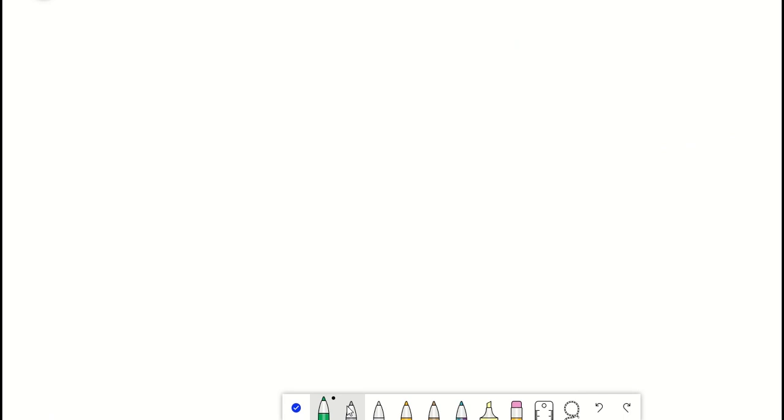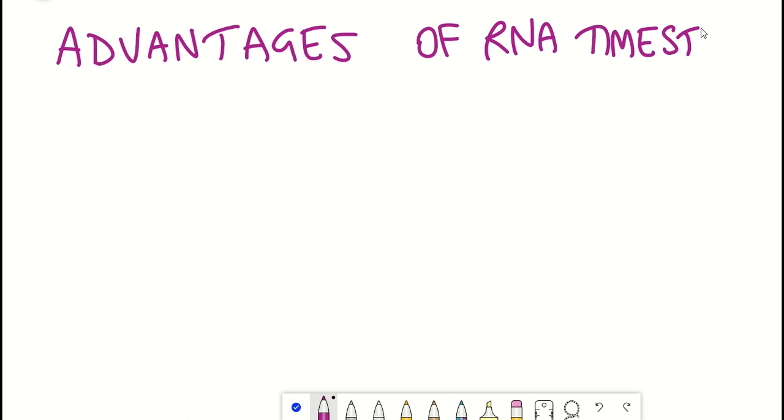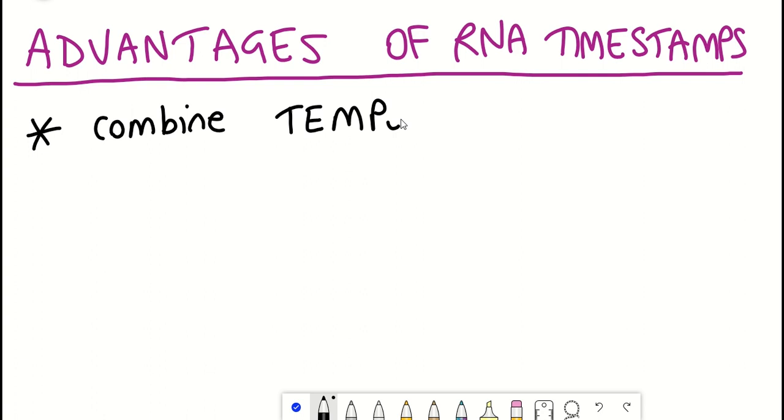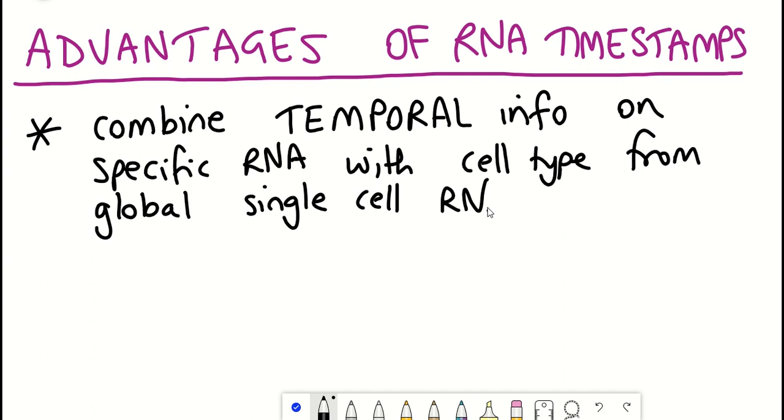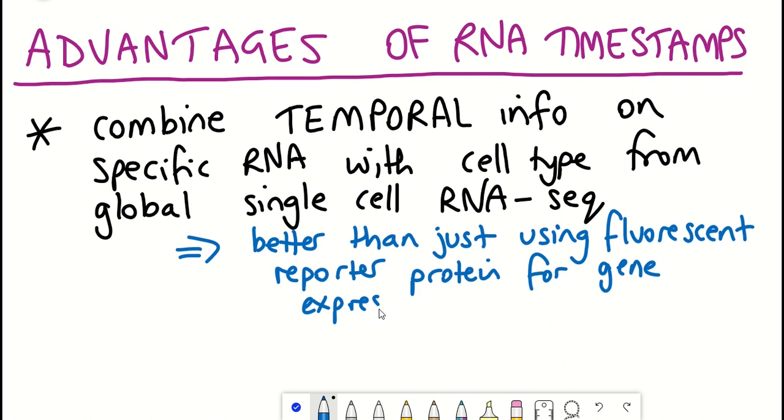Now, this new technique has some advantages over previous methods that also try to infer temporal information about RNA expression. Firstly, it's the fact that they can combine this temporal information from the RNA timestamp with information about the cell type by also having the RNA sequencing data. This has the advantage over fluorescent reporter proteins that just provide a readout of that specific gene and instead loses the information about other genes within that cell and also requires observation of the cells in situ as opposed to the destructive method of RNA sequencing.